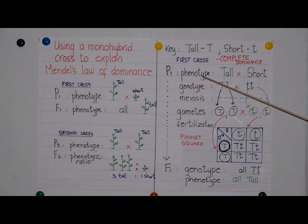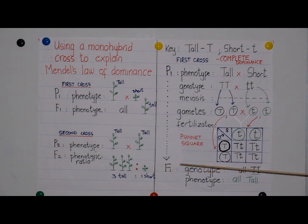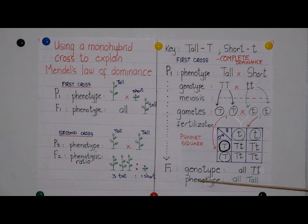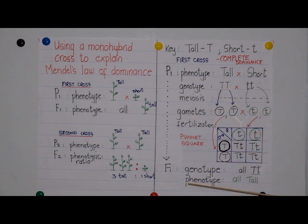So the format for a genetic cross — whether it is a monohybrid cross or a dihybrid cross — is: P1, phenotype, genotype, meiosis, gametes, fertilization, F1, genotype, and phenotype. It is important that you remember how to do this format for a genetic cross because even if you were to get the genetic cross wrong, this format alone would give you two marks.